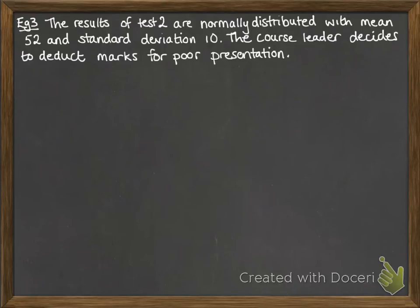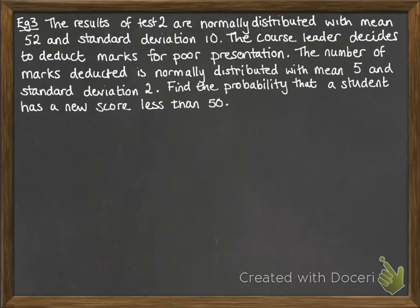And then looking at test two, these results are normally distributed, as we saw before, but the course leader decides to deduct marks for poor presentation. So the number of marks that were deducted is normally distributed with a mean 5 and standard deviation of 2. We want to find the probability that a student has a new score less than 50. So we'll call test two A and the deducted marks B. So A is normally distributed with mean 52 variance 10², and B is normally distributed with mean 5 and variance 2².